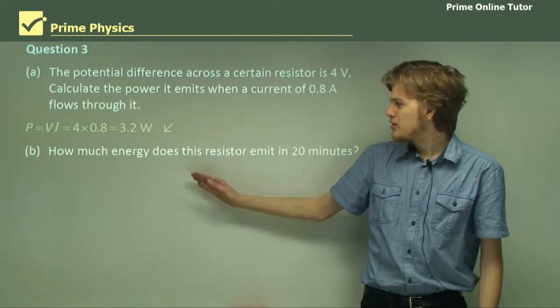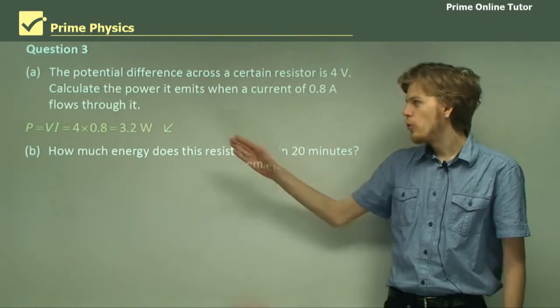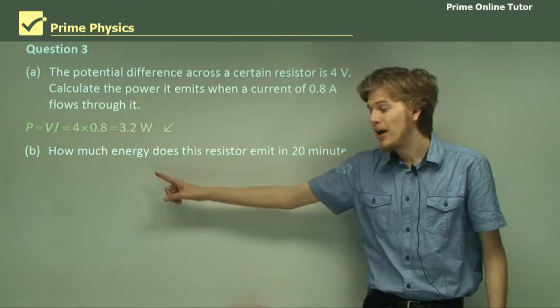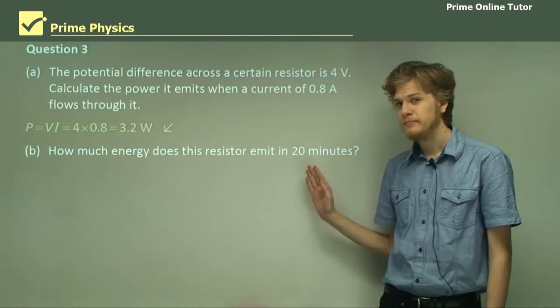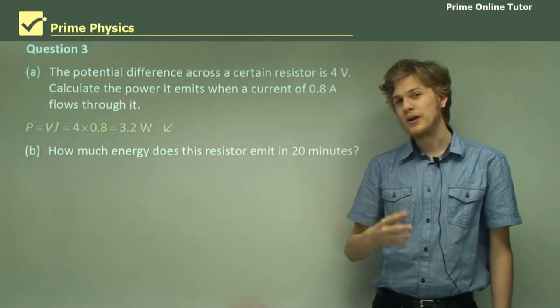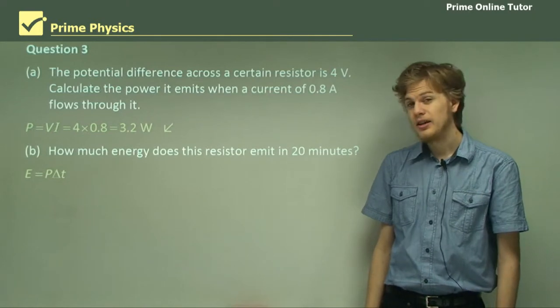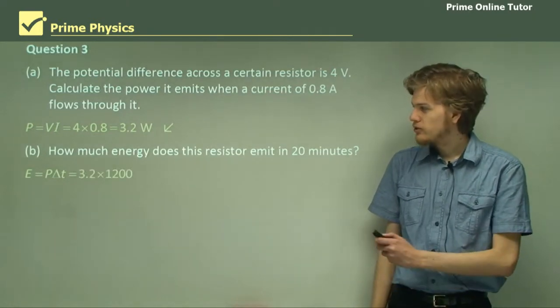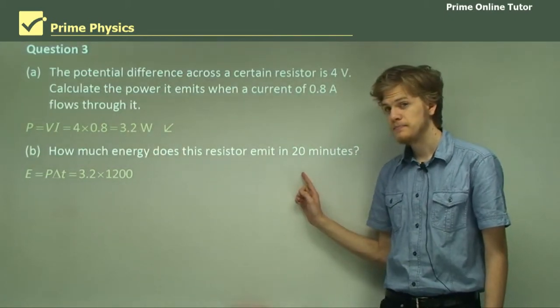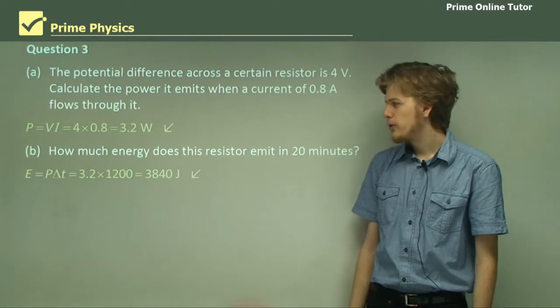Part B. How much energy does this resistor emit in 20 minutes? Now, watts is a measure of joules per second. So if we want to give an answer in joules, the SI unit for energy, we need to convert this into seconds. We don't want to answer in watt minutes, we want to answer in watt seconds, because a watt second is the same as a joule. E equals Pt. So multiplying 3.2 watts by 1,200 seconds gives us an answer of 3,840 joules, or 3.8 kilojoules.